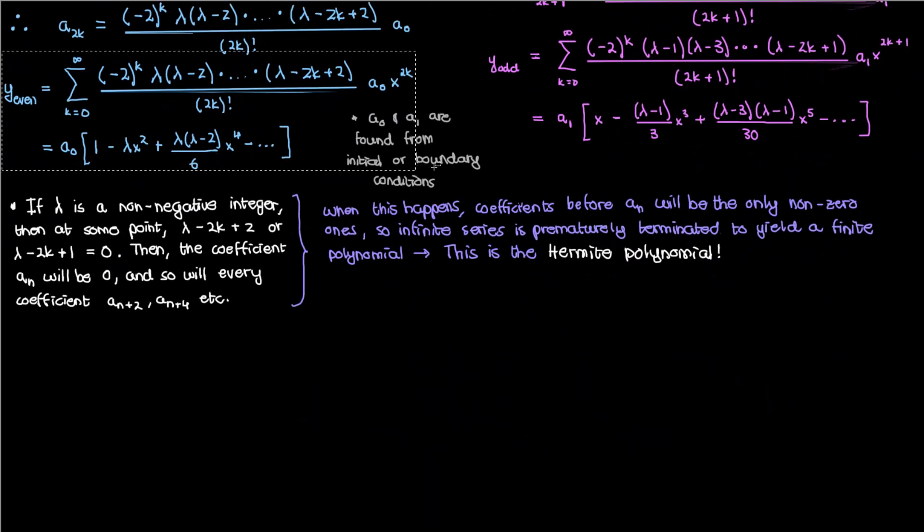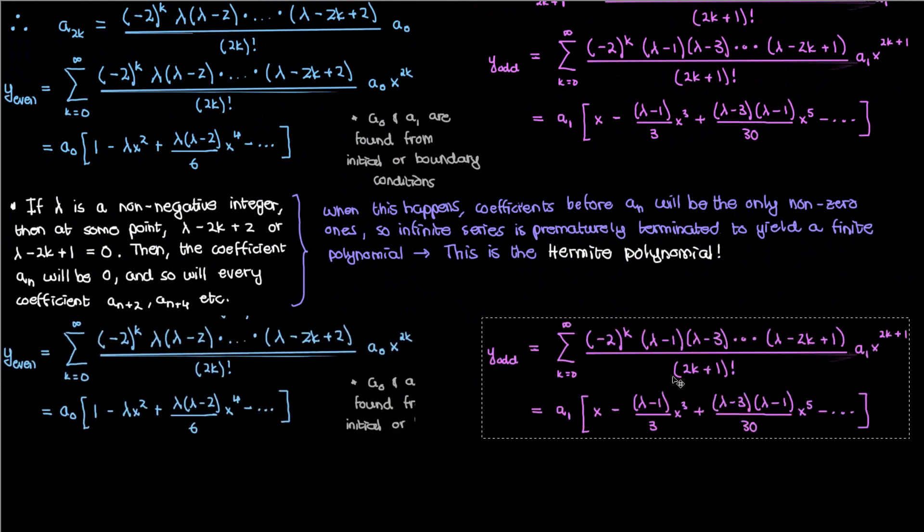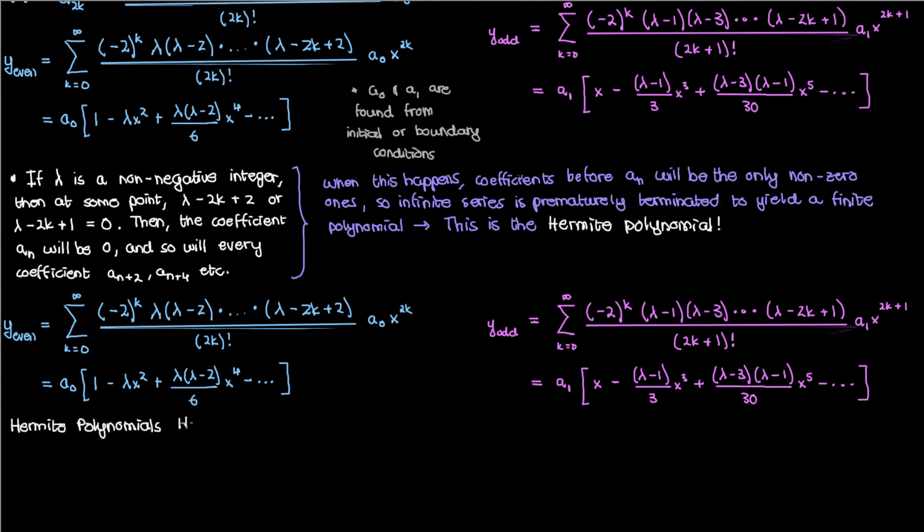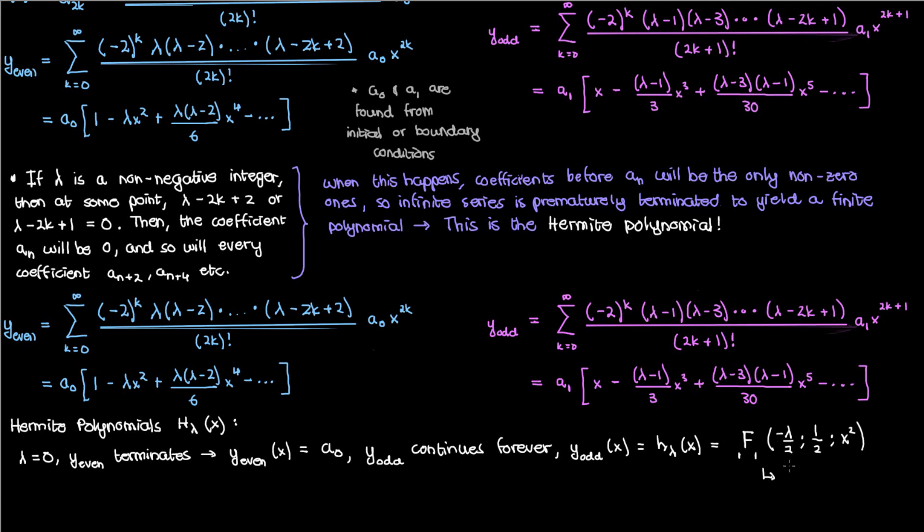Let's copy paste our even and odd index solutions, and let's use this to give some examples of the Hermite polynomials, which I'll denote by H_λ(x). If we set λ to 0, the even index solution terminates. We don't even get to x squared, so our solution is just a_0. The odd index solution, however, continues forever since λ equals 0 won't cause any coefficient in the odd solution to become 0. The solution that terminates is the Hermite polynomial, but the solution that continues forever in this case is given a different name. It's either denoted by the small h_λ(x), or it's denoted by this ₁F₁ of -λ/2, 1/2, and x², which is a fancy way of writing the confluent hypergeometric function of the first kind.